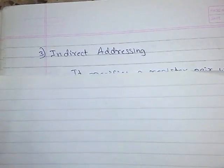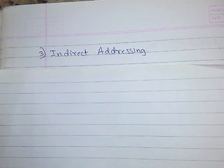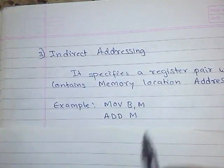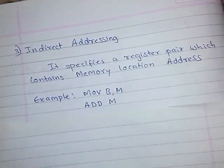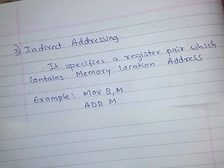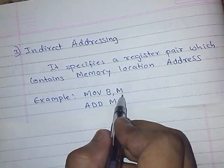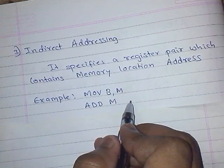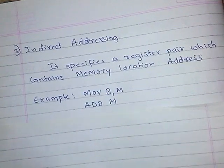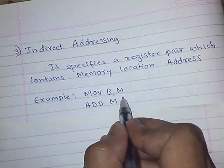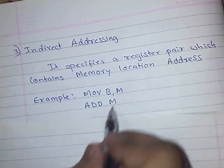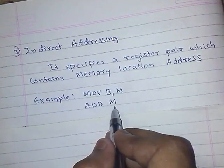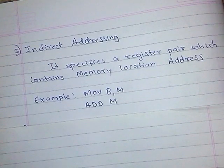The next addressing mode is indirect addressing mode. A shortcut: whenever we see M in the instruction, we assume it as indirect addressing mode. In indirect addressing mode, it always refers to the memory location of the address where data is stored. For example, MOV B, M — here M can be any memory location which is specified in the HL pair or DE pair or any other pair. Whenever you see M in the instruction — such as MOV B M or ADD M — take it as indirect addressing.